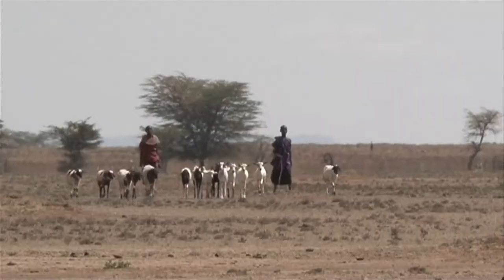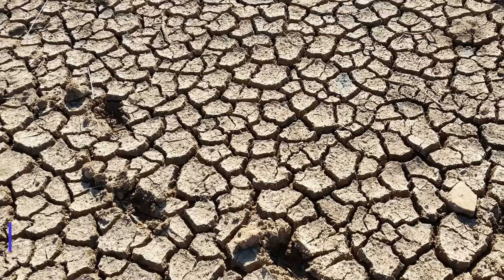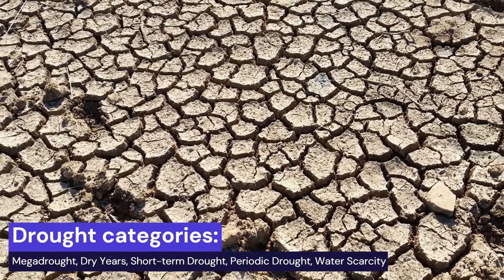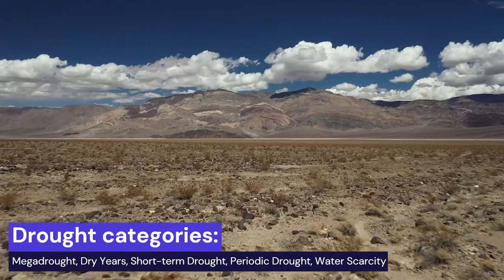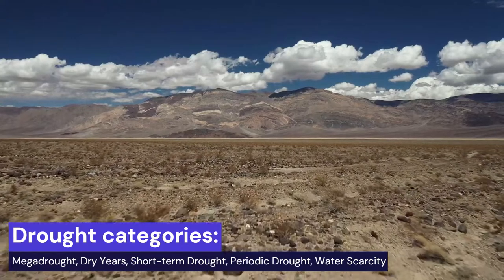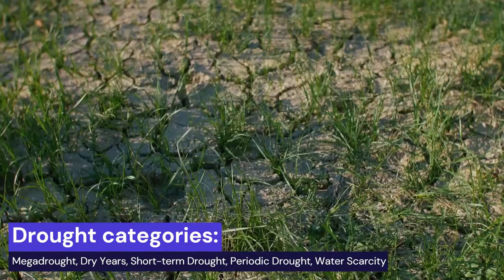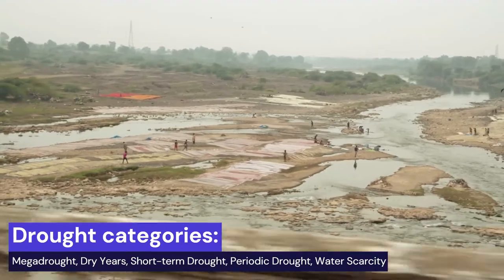Drought is typically classified into five categories. The first and most extensive type of drought is called megadrought. The other four types are called dry years, short-term droughts, periodic droughts, and water scarcity.